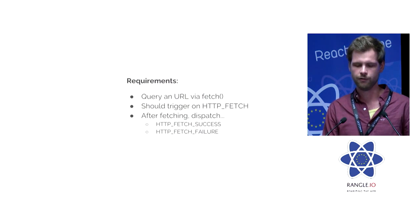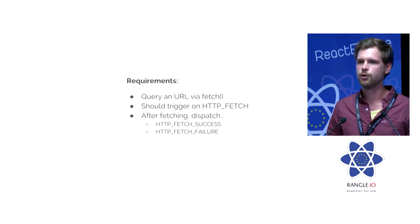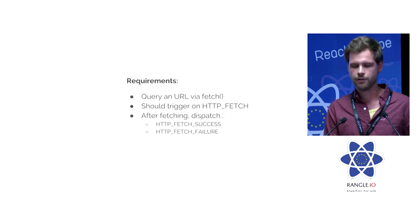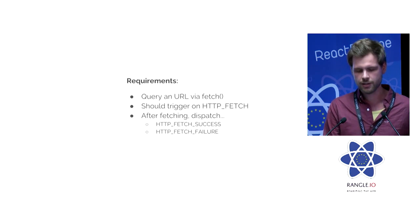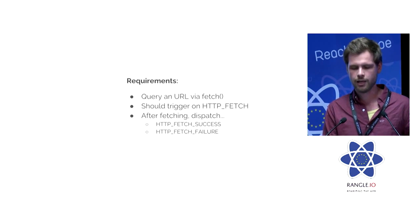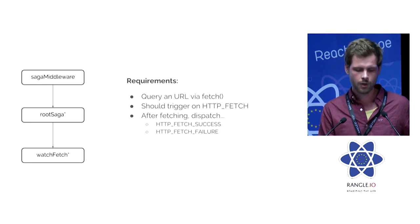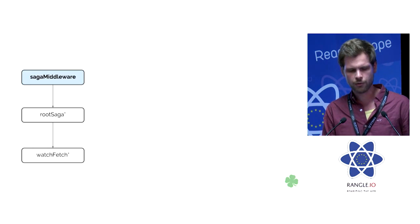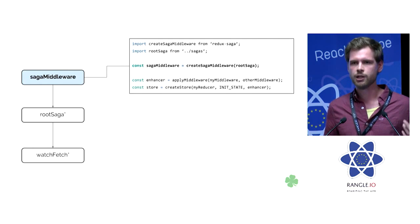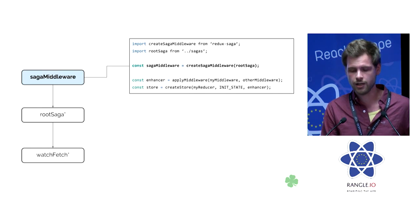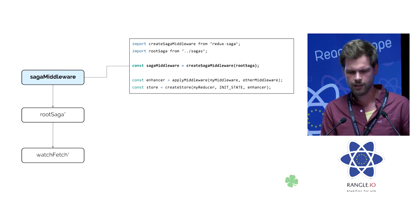So how does this work in a simple example? My requirements: I'm working on a newsfeed app and I want to fetch some data. I have a function 'httpFetch' and on success it dispatches an HTTP fetch success, and on failure a fetch failure. We have our saga middleware, our root saga, and a logic function called 'watchFetch'. We start with the saga middleware, which we put into our Redux store using the 'createSagaMiddleware' function, providing the entry point of our sagas called root saga.